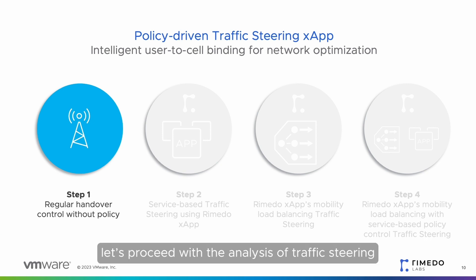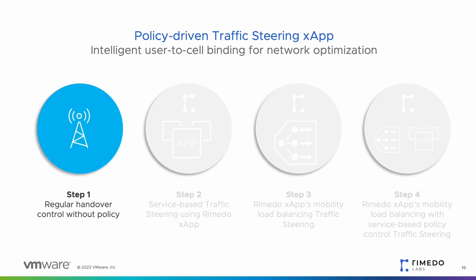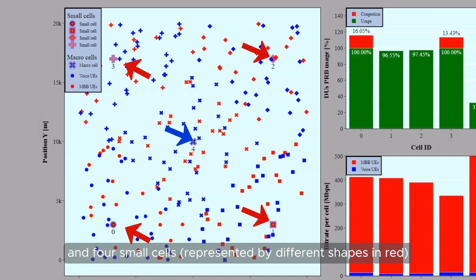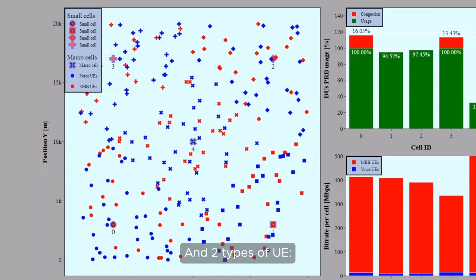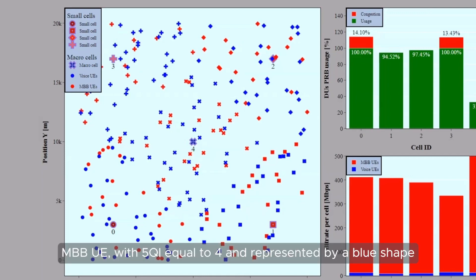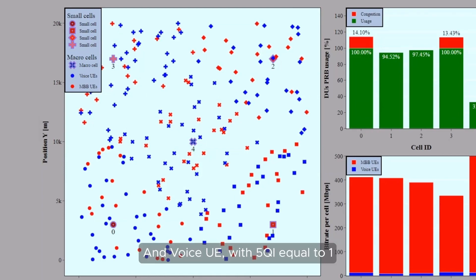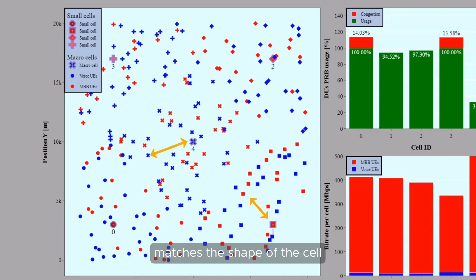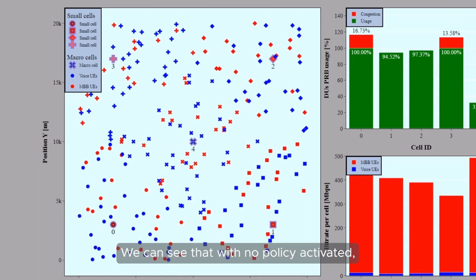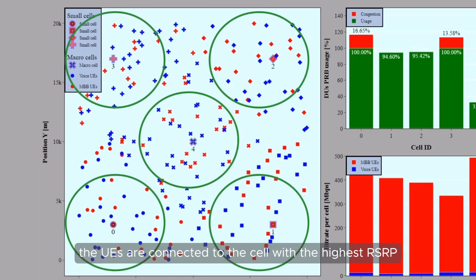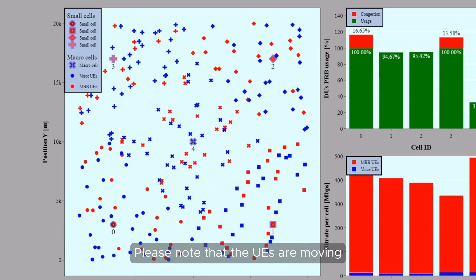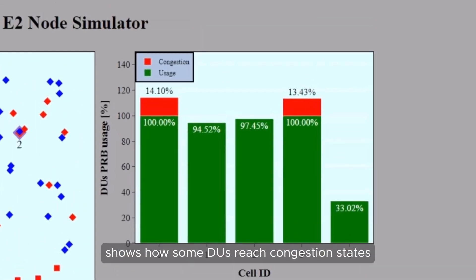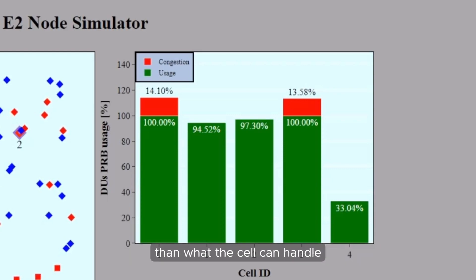With the testbed up and running, let's proceed with the analysis of traffic steering without X-App intervention. The GUI shows an area with five cells: one macro cell, represented by an X in blue, and four small cells, represented by different shapes in red, and two types of UE. MBB UE with 5QI equal to 4 is represented by a red shape. The type of shape assumed by each UE matches the shape of the cell the UE is currently associated with. With no policy activated, UEs are connected to the cell with the highest RSRP. The next graph shows the served bitrate per cell, and the PRB usage per DU graph shows how some DUs reach congestion states when UEs request more PRB allocation than what the cell can handle.